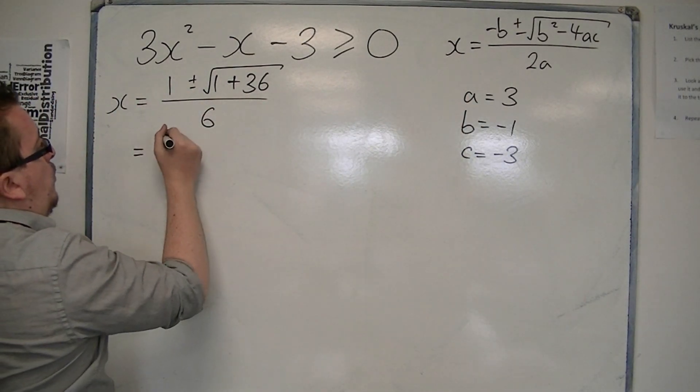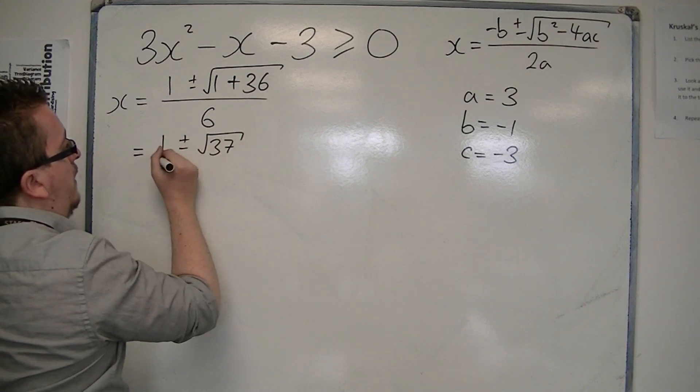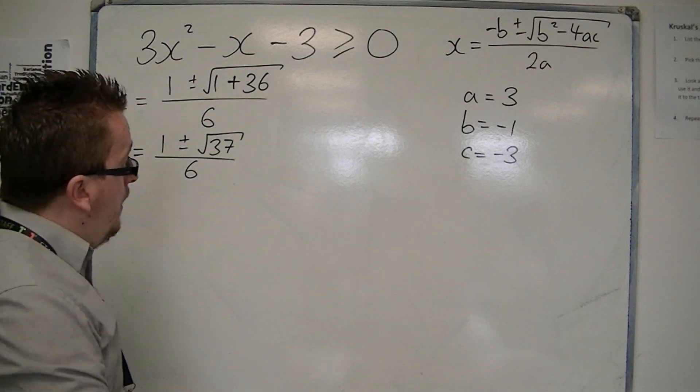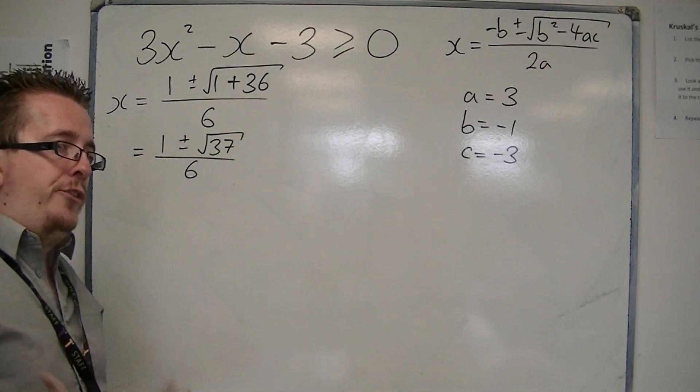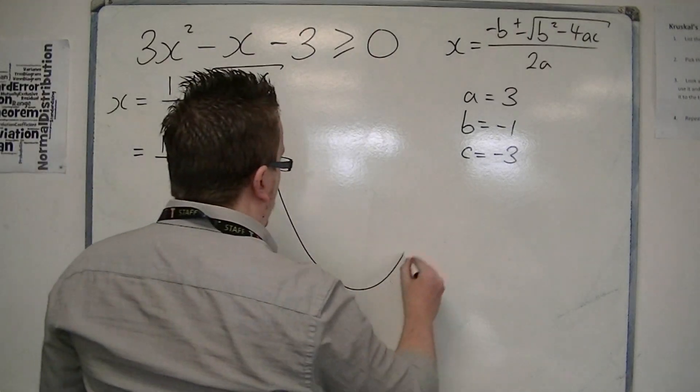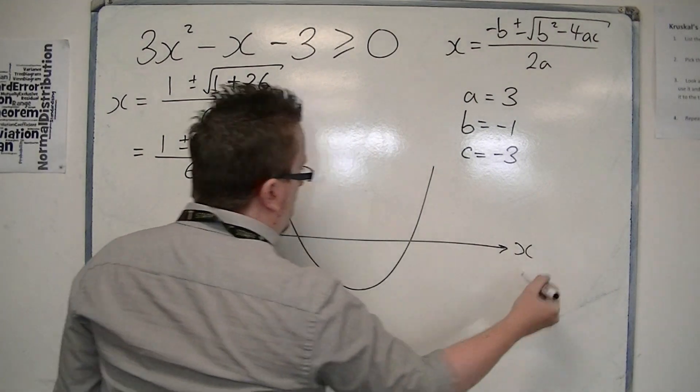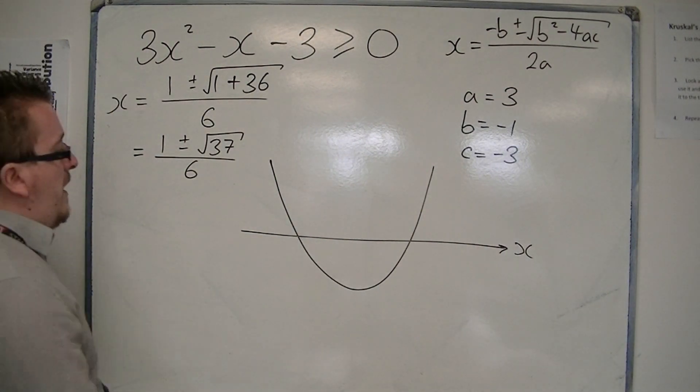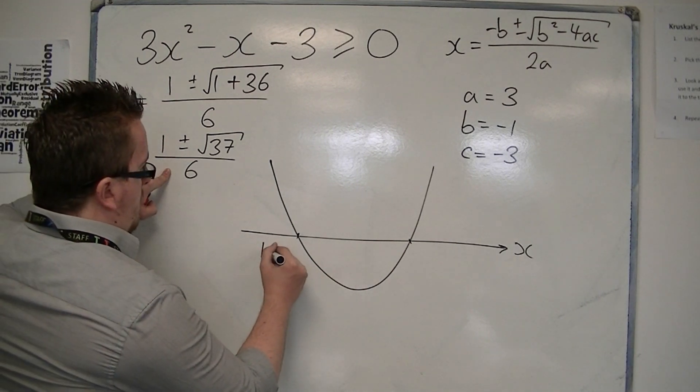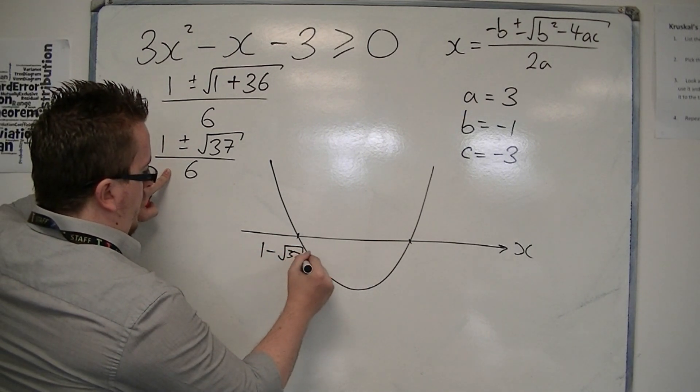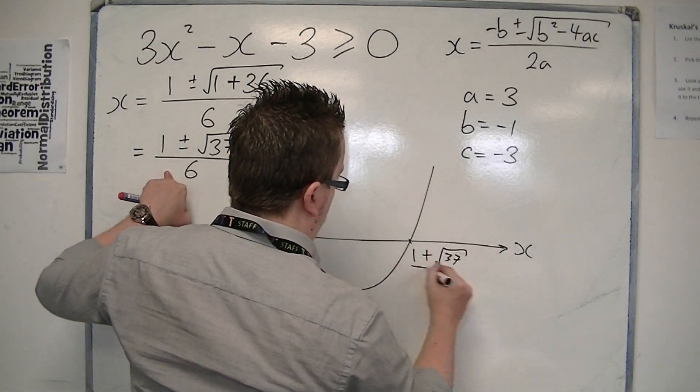So this is equal to 1 plus or minus root 37 over 6. So these are the two solutions, and that's telling me that there are two points where our parabola intersects the x-axis. And that is at 1 minus root 37 over 6, and 1 plus root 37 over 6.